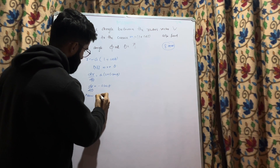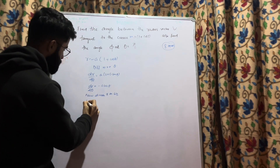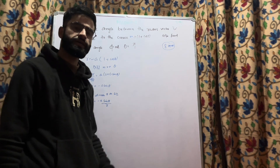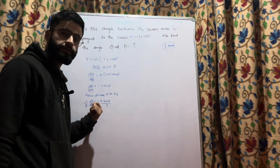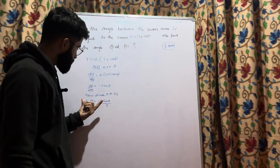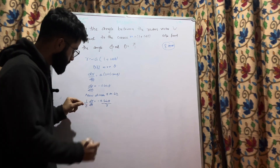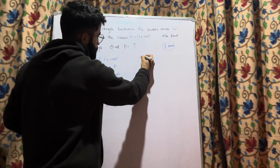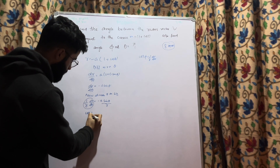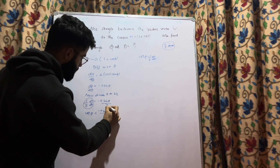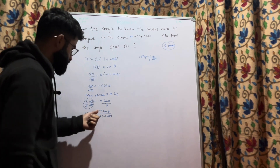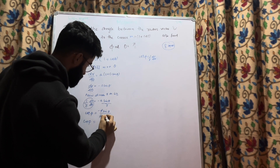Now divide both sides by R. So (1/R)(dr/dθ) = −A sinθ / R. This was the same procedure as in the previous problem. We divide by R on both sides in order to get φ into the picture, since we have to calculate the angle between the radius vector and the tangent, which is φ. From the first derivation, cot φ = (1/R)(dr/dθ). So cot φ = −A sinθ / [A(1 + cosθ)], and A cancels, giving cot φ = −sinθ / (1 + cosθ).